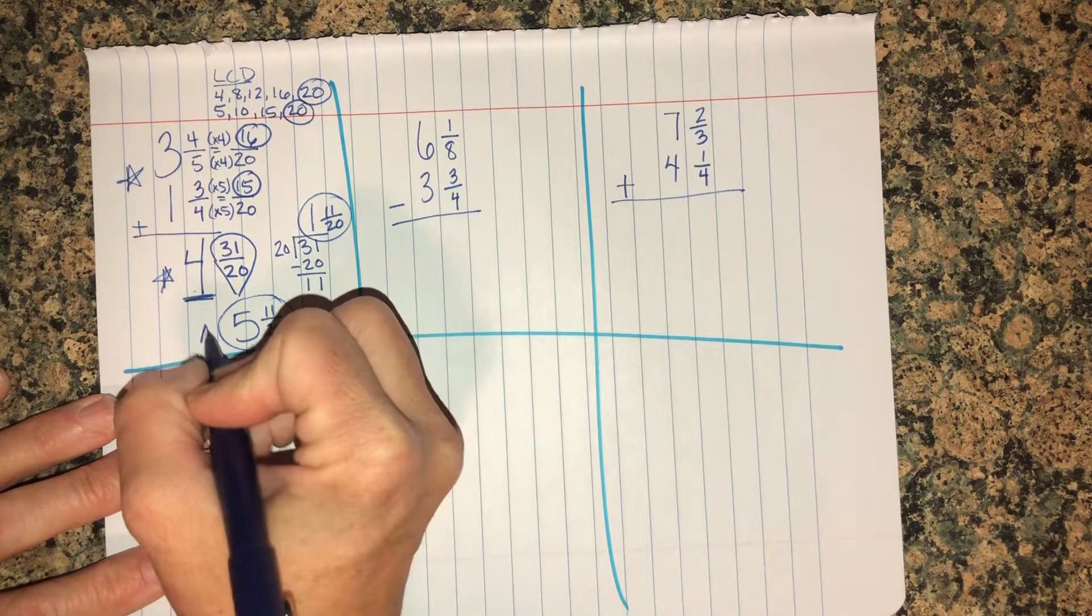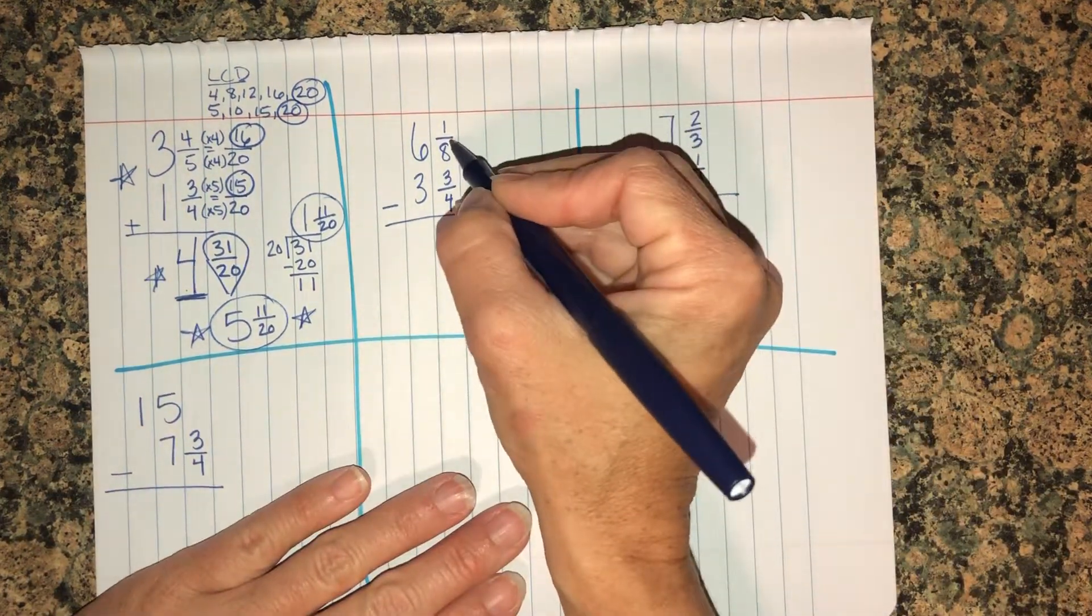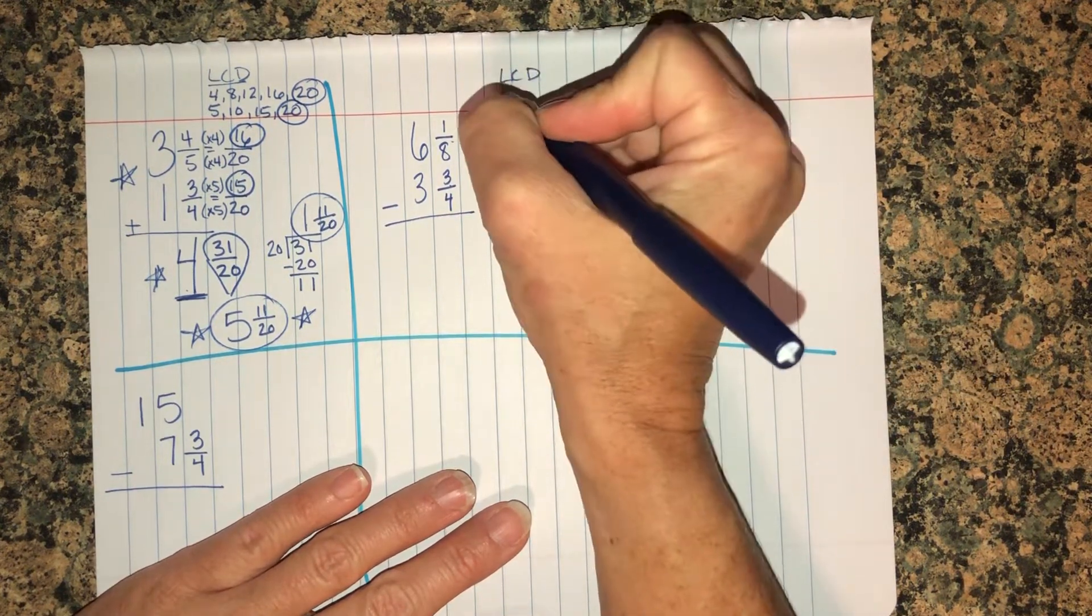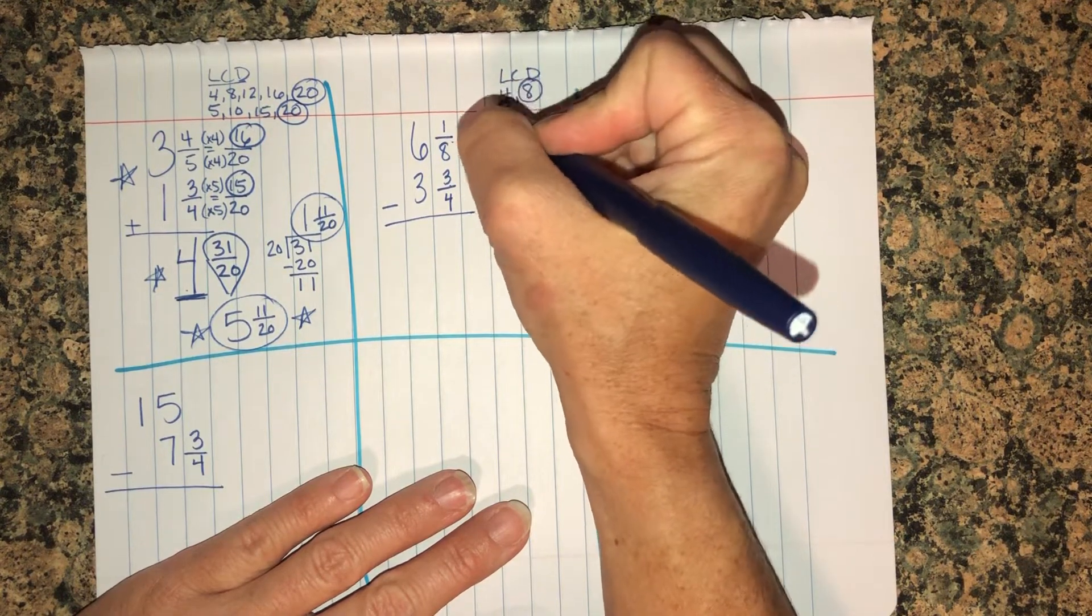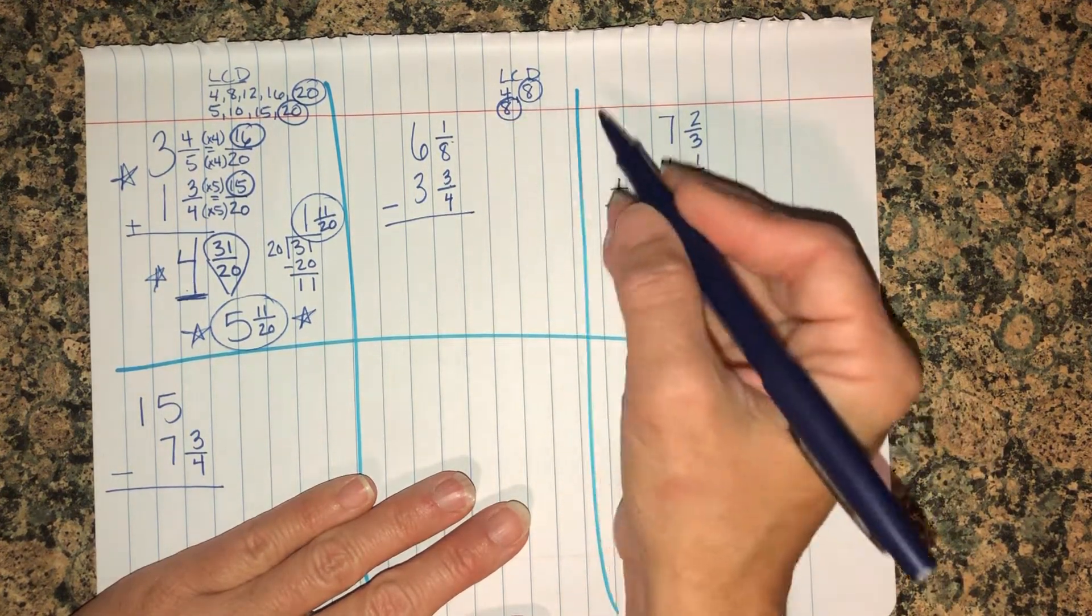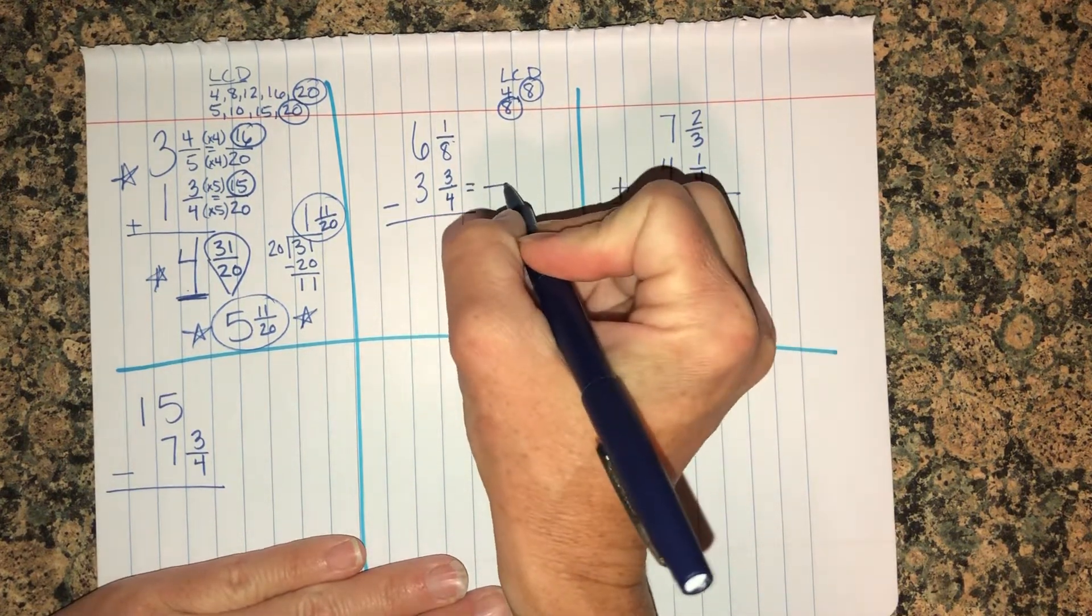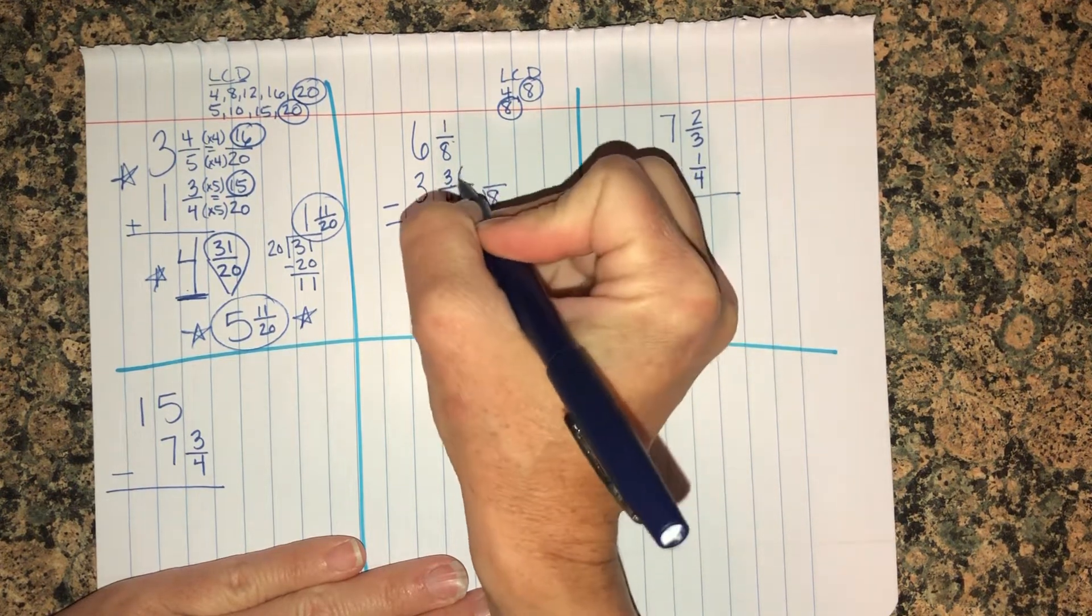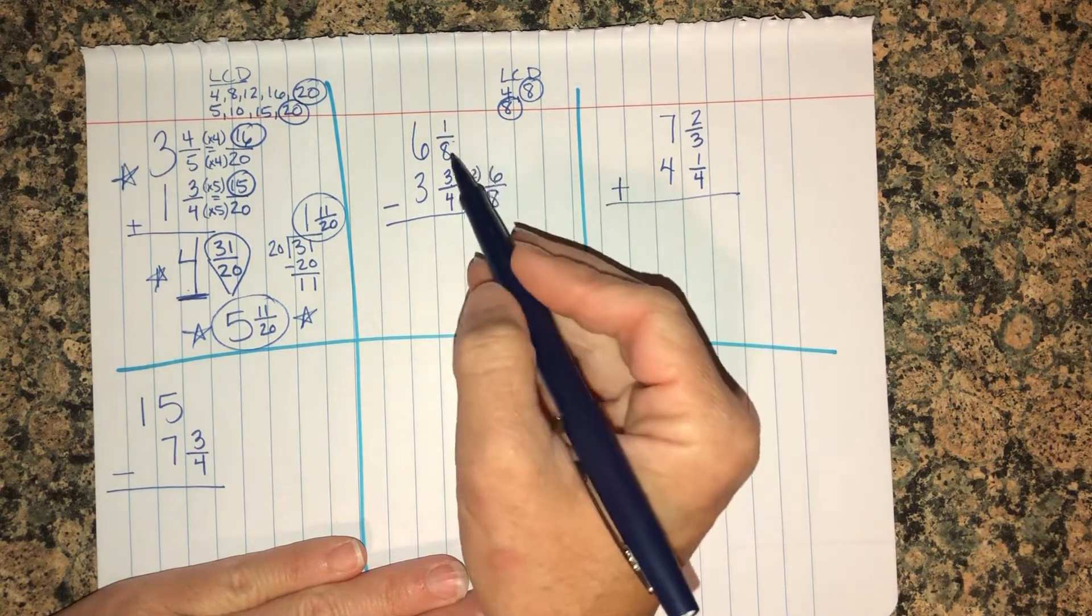This next one, least common denominator of eight and four. If you need to write them out still, do it. If you've got them memorized, don't do it. If you know what it is, you don't have to write it out. This is just to help you learn the steps. So we're going to turn them into an eighth. Four times two is eight. Three times two is six.